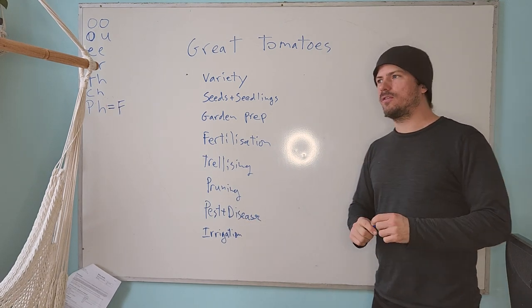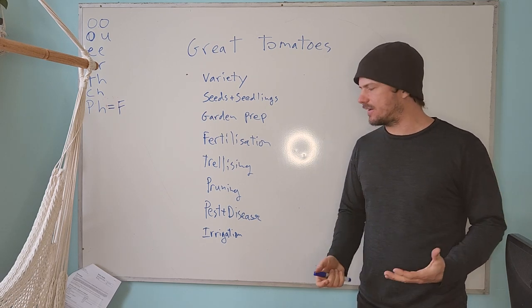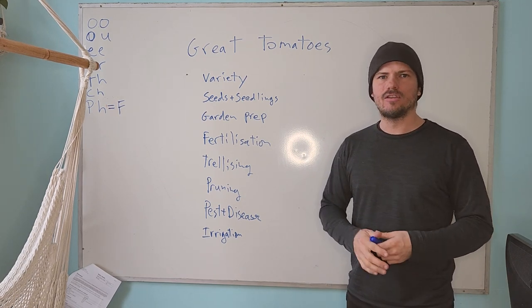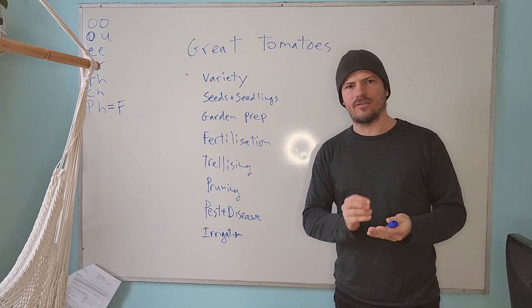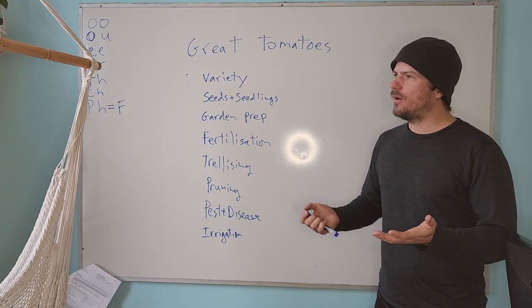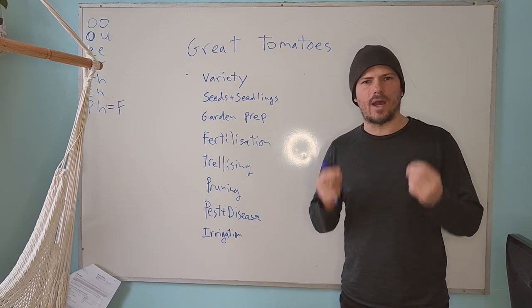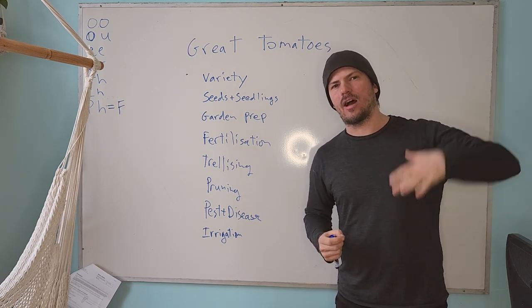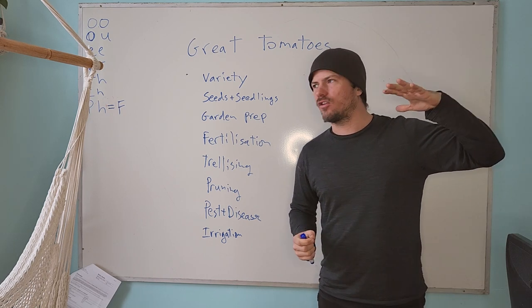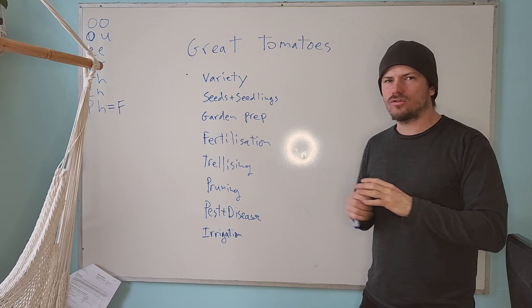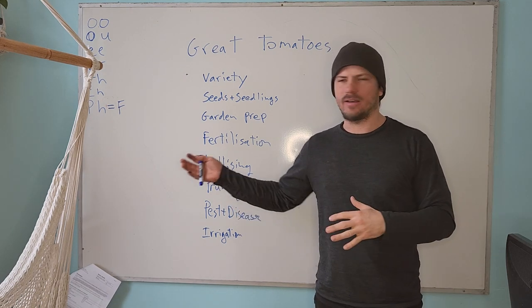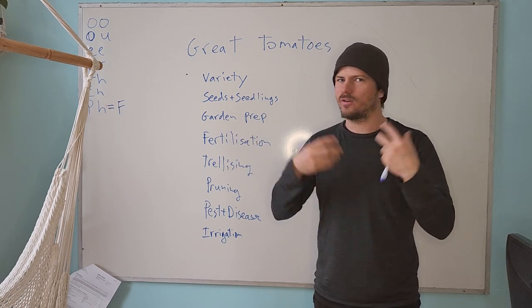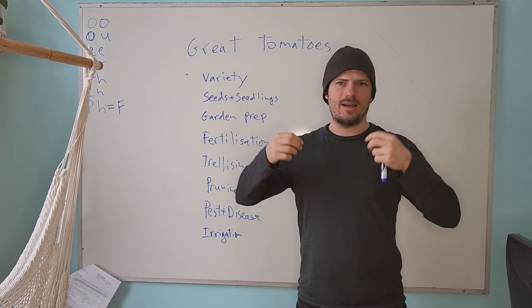In terms of diseases, so tomatoes do have a lot of diseases that can affect them. Not a lot of insects, but a lot of diseases, mostly fungus and bacteria. So there's a whole range. I won't discuss them each individually. The main thing is that you need to create dry conditions, right? Because tomatoes are originally from the Andes. They're a high altitude, dry climate crop. And so they don't tolerate the humidity that we have here in Eastern Canada. And so that's why the humidity, the leaves stay moist. And that's when the spores of the different fungus can sprout and start to be an issue.